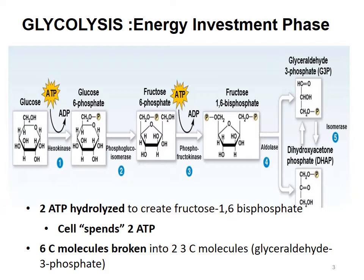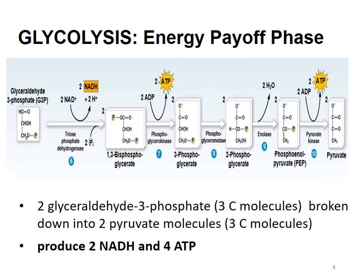Then that six-carbon molecule is broken into two three-carbon molecules called glyceraldehyde-3-phosphate. In the energy payoff phase, the two glyceraldehyde-3-phosphate molecules are broken down into two pyruvate molecules — three-carbon molecules — and we produce 2 NADH and 4 ATP. We spent 2 ATP to get it going and we produce 4 at the end.